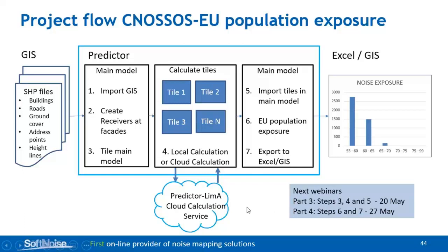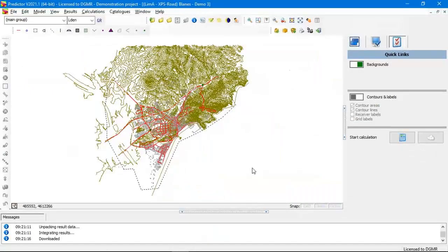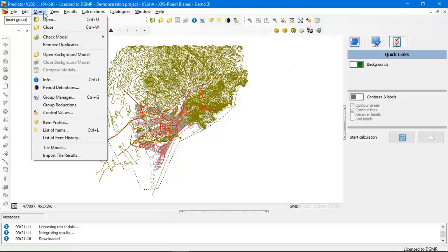Let me first start in Predictor. What I want to show you is how you can tile the main model. I'll do a small demonstration and show how you can start the calculation. This is an example model. You can tile the model by using tile model — go to the model menu and click on tile model.